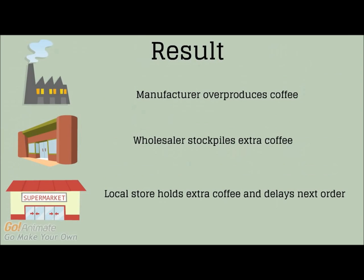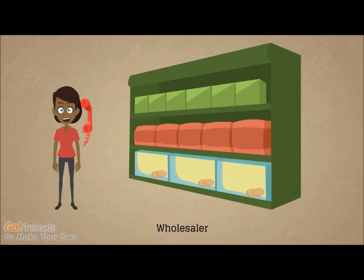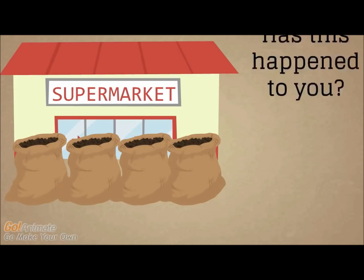The results: the manufacturer overproduces coffee, the wholesaler stockpiles extra coffee, and the local store holds extra coffee and delays their next order. Thus the manufacturer already has excess inventory, notices the reduced orders, and scales back on production. Has this happened to you?